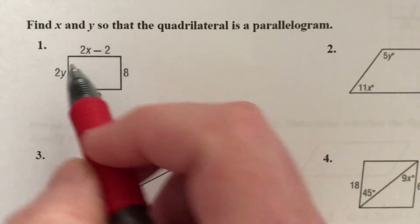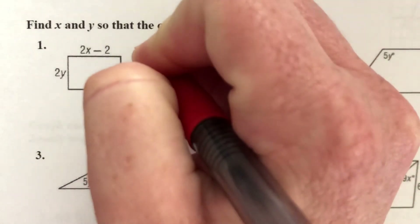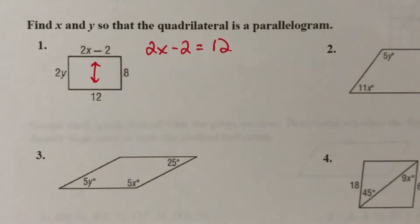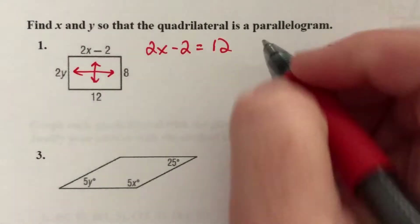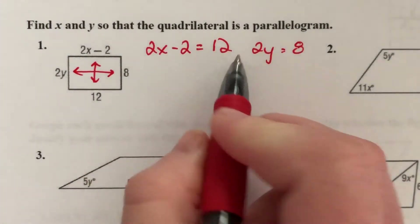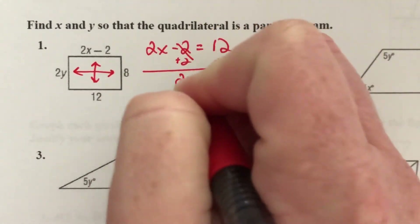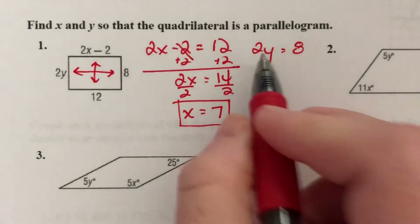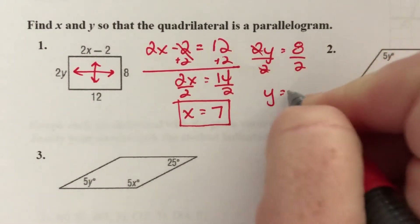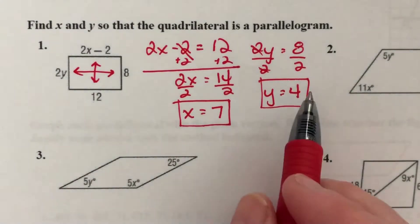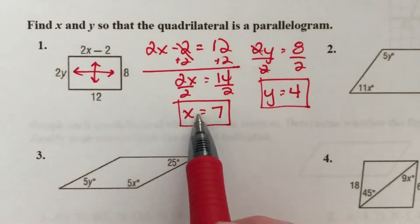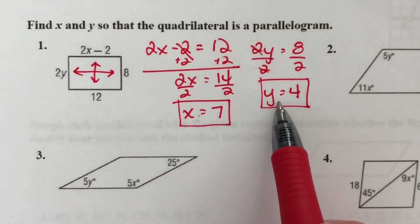We set 2x − 2 equal to 12 (the side across from it) and solve for x. Adding 2 gives 2x = 14, then dividing by 2 gives x = 7. We also set the other pair of opposite sides equal: 2y = 8, divide both sides by 2, so y = 4. For this to be a parallelogram, opposite sides have to be congruent for both pairs, and setting them equal lets us solve for x and y.